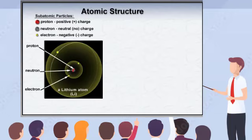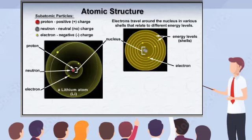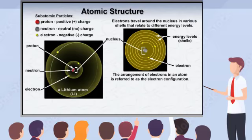The protons and neutrons are found together and collectively make up an atom's nucleus. Electrons travel around the nucleus in various shells that relate to different energy levels. The arrangement of electrons in an atom is referred to as the electron configuration.